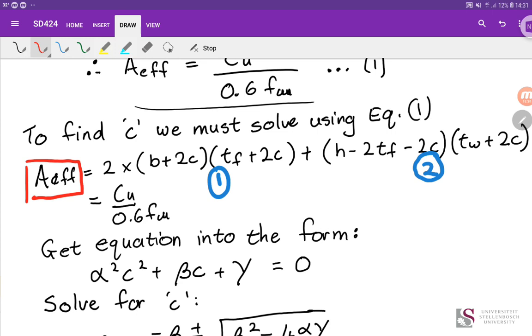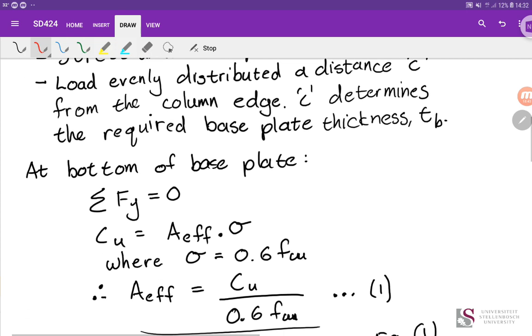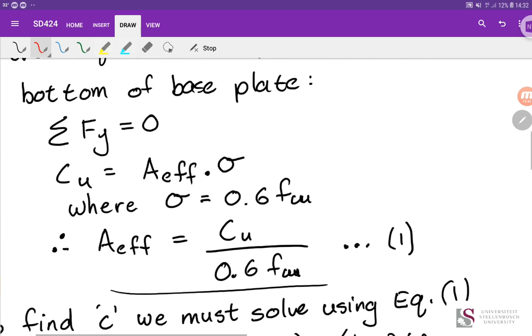If you just take the compressive load Cu divided by 0.6 FCU, you'll get to an area. And if you look at the area of column, you can kind of roughly work out what pattern would govern before doing lots and lots of equations. That's one of the quicker ways to solve it. Okay, so that takes us to the end of the derivation, looking at how do we treat these base plates and how do we eventually derive at a thickness that we can use to carry the load.